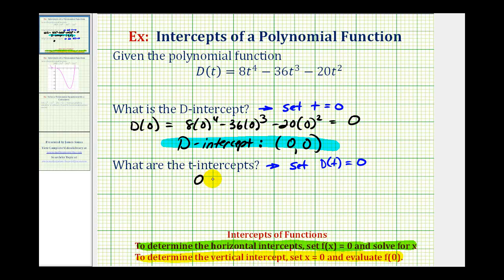So we're going to solve the equation 0 = 8t⁴ - 36t³ - 20t².